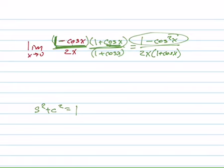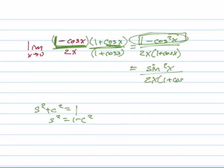So sine squared would equal 1 minus cosine squared. So that's what we have right there. We have 1 minus cosine squared. So that equals sine squared of x over 2x times 1 plus cosine of x.